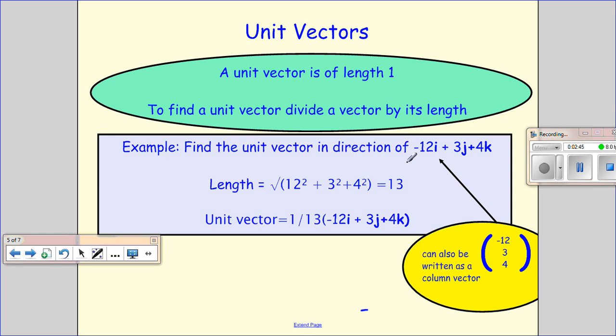And so, in this case, here's our vector. We want to go in this direction. We find its length: 12 squared plus 3 squared plus 4 squared and square root it, which is 13. That's taking us 13 units in that direction. And I don't want to go 13 units. I only want to go one unit.